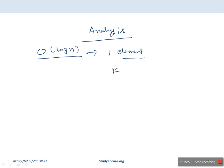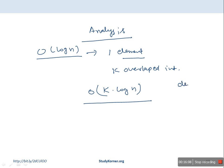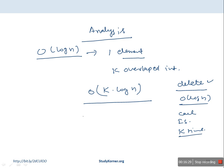To find k overlapped intervals, we run the interval search k times. Each call takes O(log n) time because the height of the Red-Black tree is O(log n). After finding an overlapping interval, we delete it in O(log n), then call interval search again. The total time complexity for finding k overlapped intervals is O(k log n).